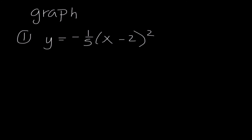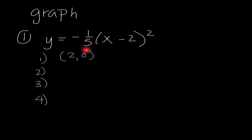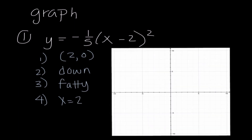Our next concept is graphing. This equation is already in the correct form, so I'll list the four characteristics. The vertex is (2, 0) — taking the opposite of the h value for x, and with no k value that's 0. Since a is negative 1 fifth, the parabola opens down and is wide (fatty). The line of symmetry is x equals 2. When graphing, I go to (2, 0), and since it's down and wide, I go down 1 and over 2 in both directions, then sketch the line of symmetry. All four characteristics and the sketch are required for full credit.